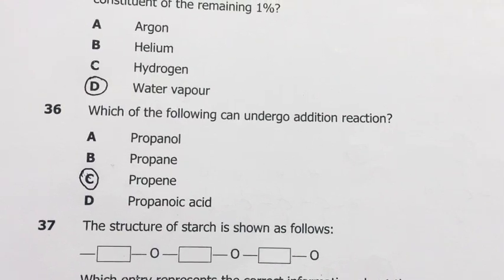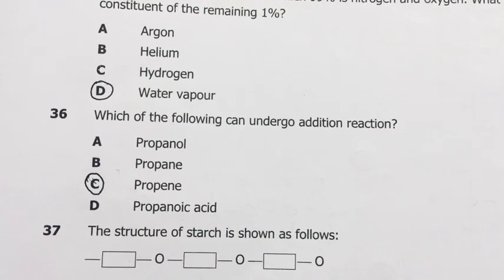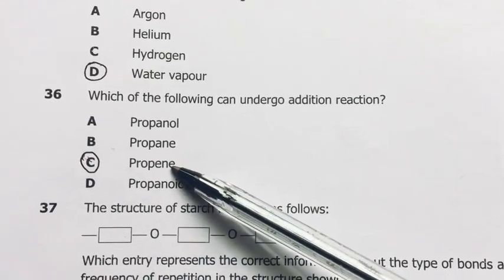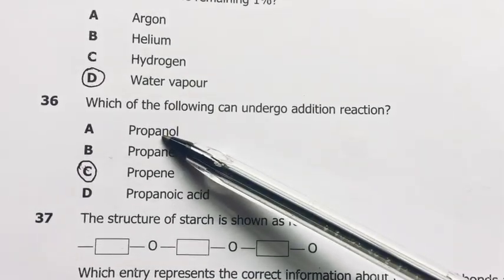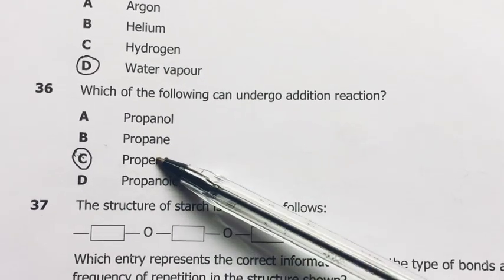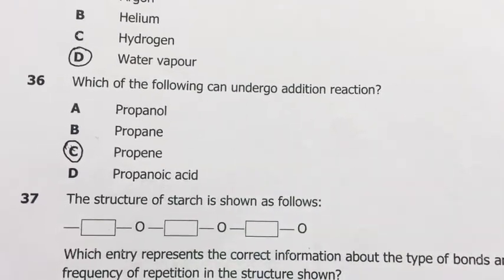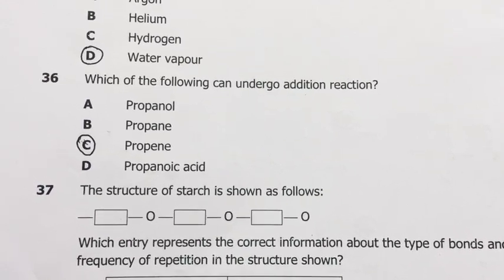Number 36. Which of the following can undergo addition reaction? You have to look for the unsaturated species. So propene is unsaturated. Look at this, propane. But here there's an E. Meaning unsaturated, it has a double bond. Propene.